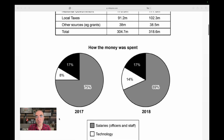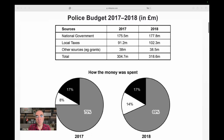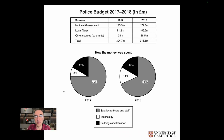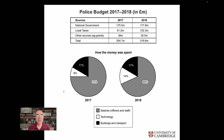We have a table and two pie charts — that's the visual. Then we have the time frame: 2017 and 2018. Both are in the past, so we are going to use past simple tense.